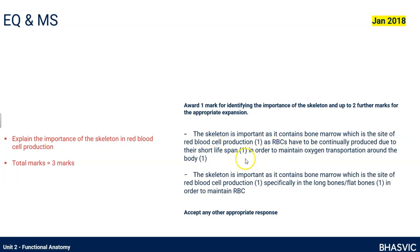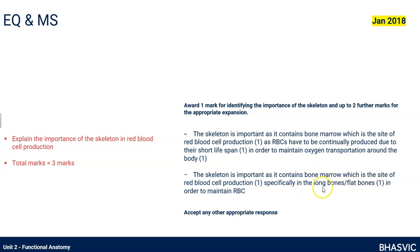Here's another question: explain the importance of the skeleton in red blood cell production. The mark scheme says we produce red blood cells in red bone marrow, which is in the epiphyses of long bones. We need to produce them because red blood cells are essential for transporting oxygen around our body. Red blood cells are mainly produced in long bones and flat bones.